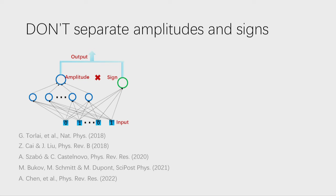The problem is that we usually separate the amplitudes and signs in the neural network, but that's a bad choice. The traditional architecture for most neural quantum state applications has an amplitude network for the positive probability and a separate sign network for the sign structure. Taking their product was expected to give a good wave function. I'm also one of the people who worked on this direction for many years, but I gradually realized it was a very bad choice.